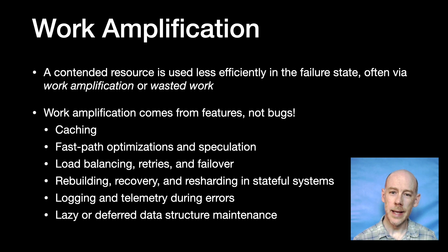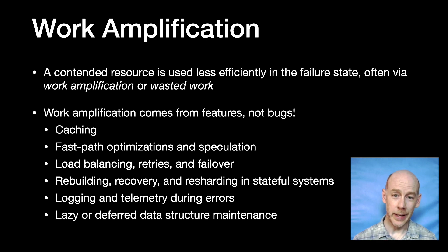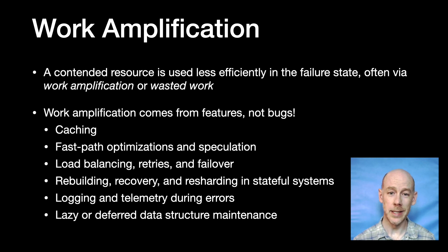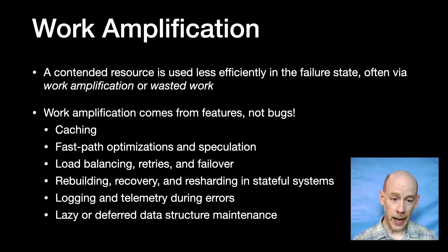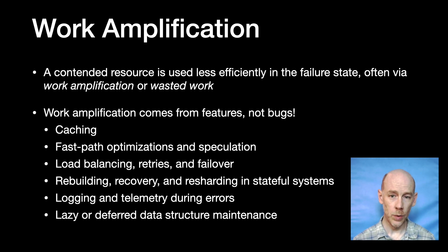A recurring theme is that the feedback loop involves some sort of contended resource that is used less efficiently in the failure state. In our example, the database work was amplified by a factor of two when the system was overloaded. Surprisingly, the gap between common-case efficiency and failure-state efficiency often stems from features that were added because they make the steady state better. So work amplification usually comes from features, not bugs. Optimizations that increase work amplification include caching, extra work to try to make the system more reliable or address failures, and situations where there's competition between doing work now versus doing work that will make future work cheaper.